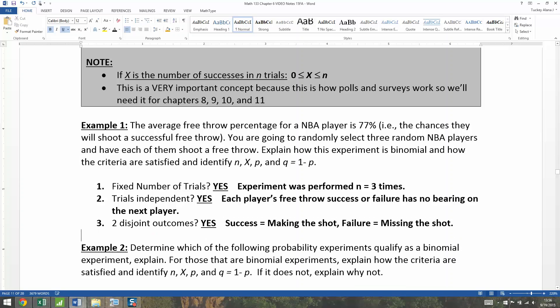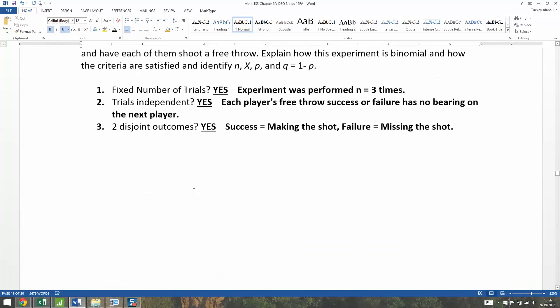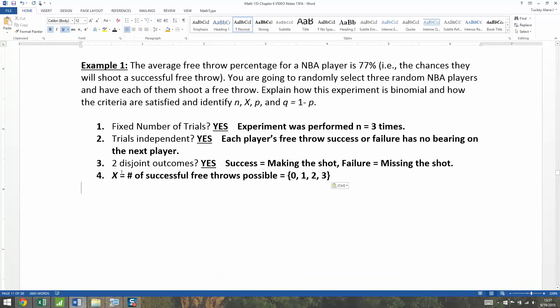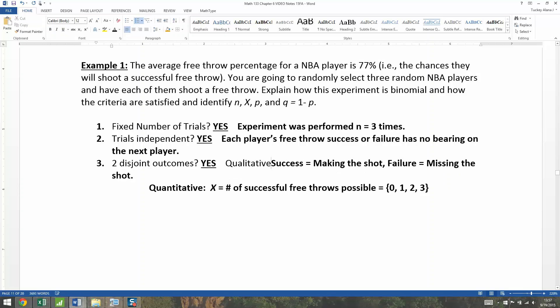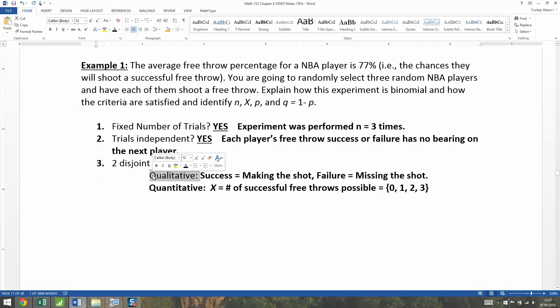X is the number of successes, the number of successful free throws. And that means it goes zero, one, two, up to three. You can't have any more than three because you're only having three shots. So this is quantitative. You're taking something that's qualitative—success and fail—and you're going to convert it into something that's quantitative, which would be zero, one, two, three. And that's extremely powerful.